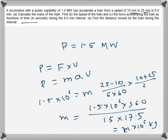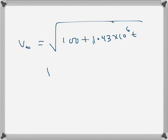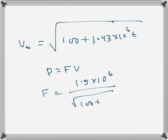To find the force accelerating the train as a function of time, we use P = F × v, so F = P / v(t). That gives F = 1.5 × 10⁶ divided by √(100 + 1.43 × 10⁶ × t), with force in newtons and velocity in meters per second.